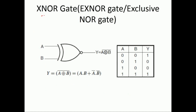Finally, the last gate is EXNOR gate. EXNOR gate is the combination of EXOR with NOT gate — the bubble represents the NOT gate. The Boolean expression is A·B + A-bar·B-bar. To fill the truth table, you can either substitute values into the Boolean expression, or directly take the EXOR outputs — 0, 1, 1, 0 — and invert them to get 1, 0, 0, 1.